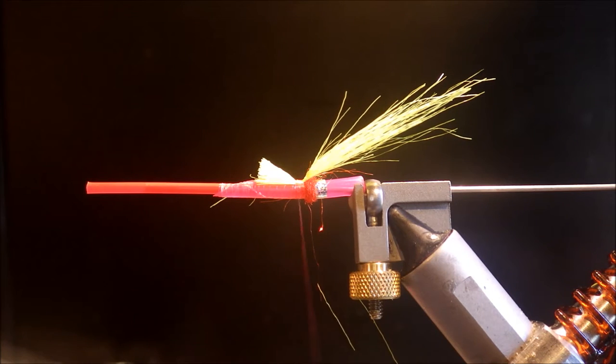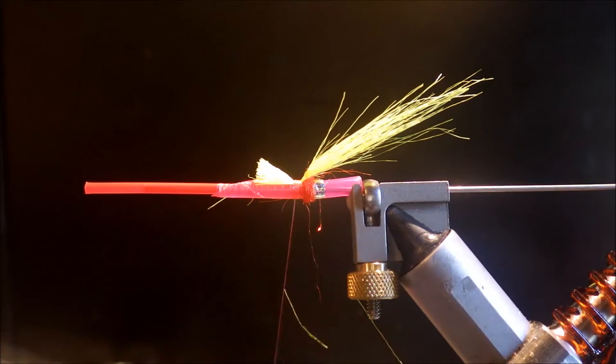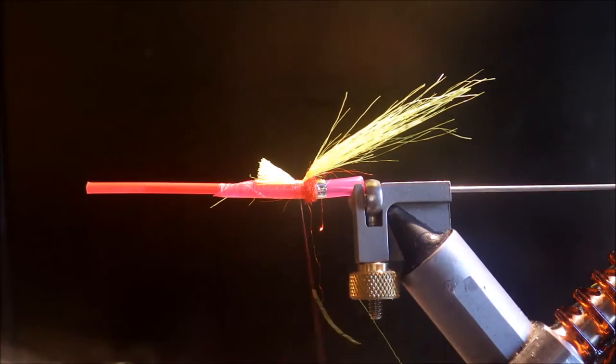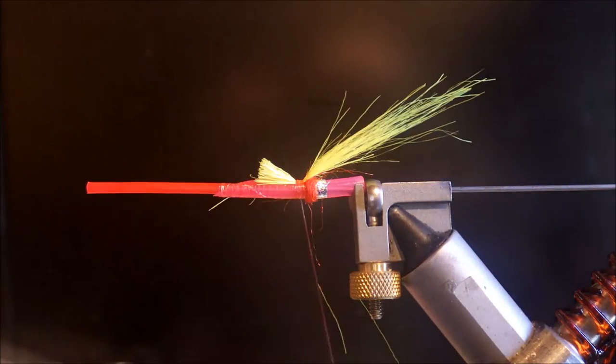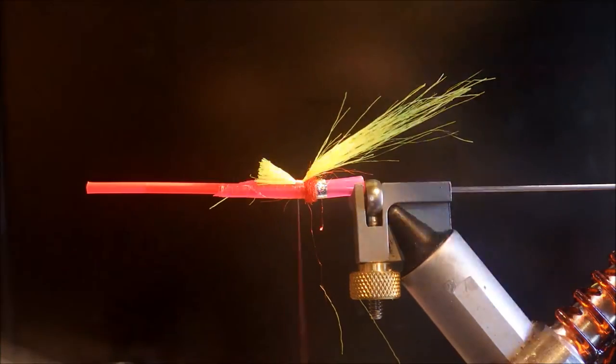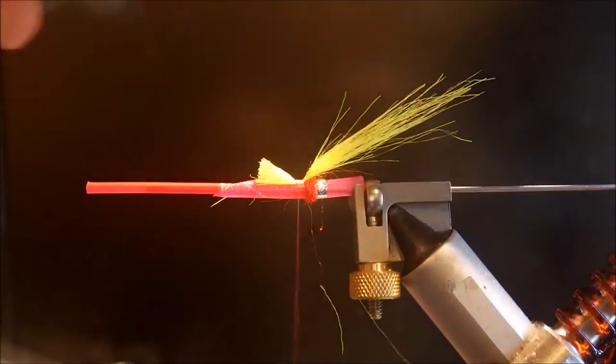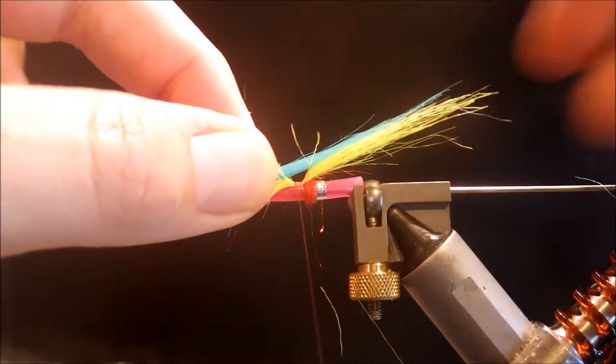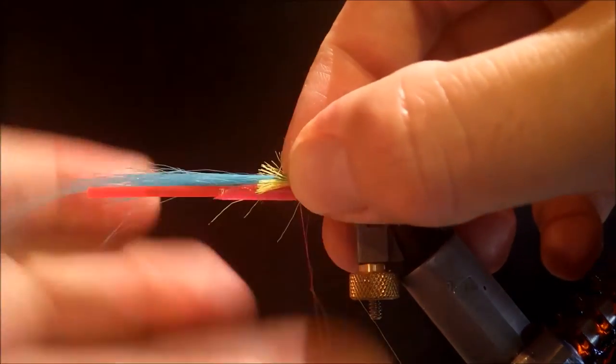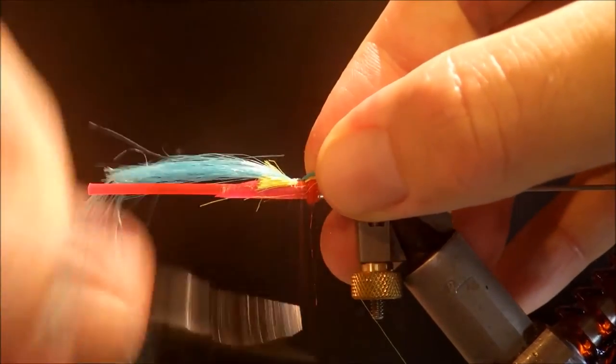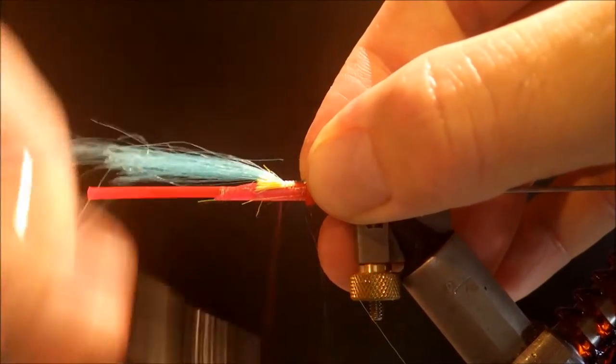Then I'll just repeat this with the blue craft fur, but we'll tie it slightly shorter. Again you just sort of stack it into a slight taper. And then tie that in, say two thirds of the length of the yellow.